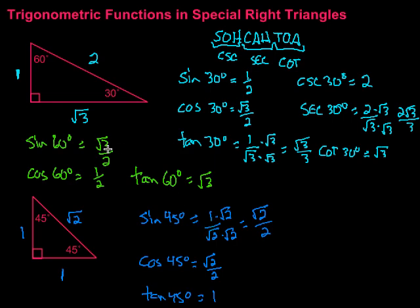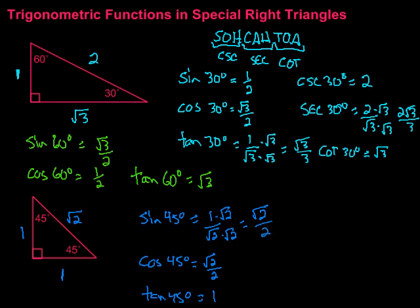What you may notice is that 30, 45, and 60 degrees are values that will come up when we study the unit circle. If you can remember these special triangles, you can derive the sine, cosine, and tangent for those angles, which will help us build the unit circle. Keep that in mind as you continue studying trigonometric functions. Hope this video was helpful — keep working hard on your math!